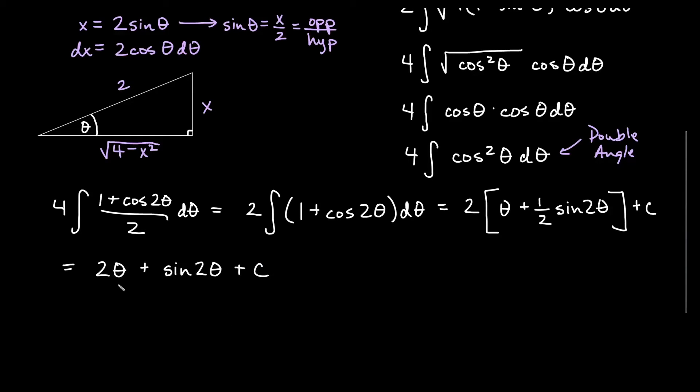So a couple of things. I need to know what theta is and then I can replace that. So if I look in here, 2 times theta, theta would be from my original substitution of sine theta equals x over 2. That would tell me that theta is actually the inverse sine of x over 2. So this one here will be the inverse sine of x over 2.